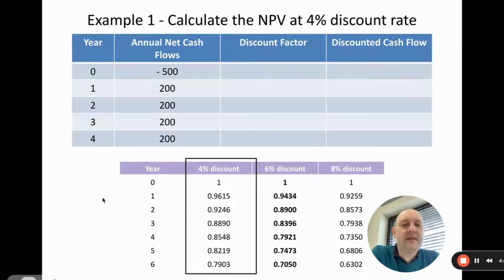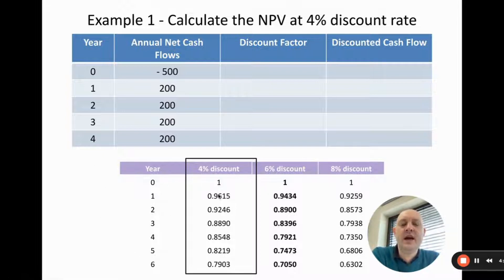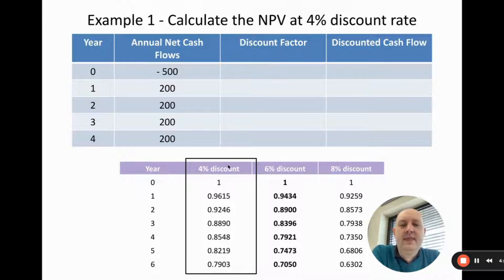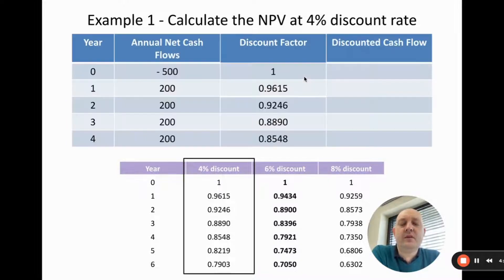You will be given a discount factor table showing years zero up to six, with columns for different discount rates — four percent, six percent, eight percent, etc. You look at the discount rate in the question, here it's four percent, go to that column, and copy those numbers into your table. You need to create two new columns: discount factor and discounted cash flow. From the four percent column, you'd see year zero is 1, year one is 0.9615, and so on.